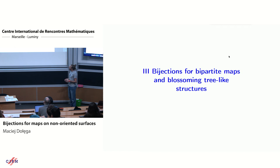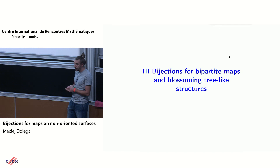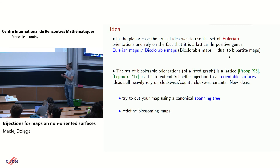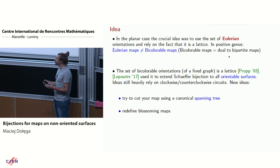This also motivates understanding blossoming bijections, because hopefully they will behave slightly better. It turned out this is the case. In the orientable case, this is a very different situation from labeled objects — it was known from the beginning that orientable higher-genus labeled objects behave exactly the same as planar. But this was not the case for blossoming bijections, and it was open for a long time to extend Schaeffer's construction to higher-genus surfaces. This was done by Mathias Lepoutre in 2017.